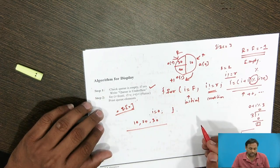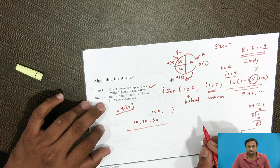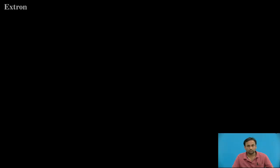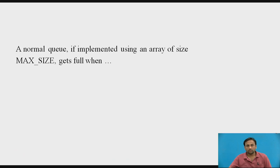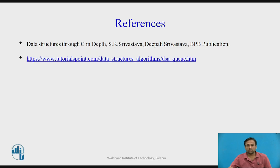This covers the algorithms for insert, delete, and display for the circular queue. Now pause this video and answer this question: for a normal queue implemented using an array of size max_size, what is the full condition? The answer is: rear == max_size - 1. Thank you.